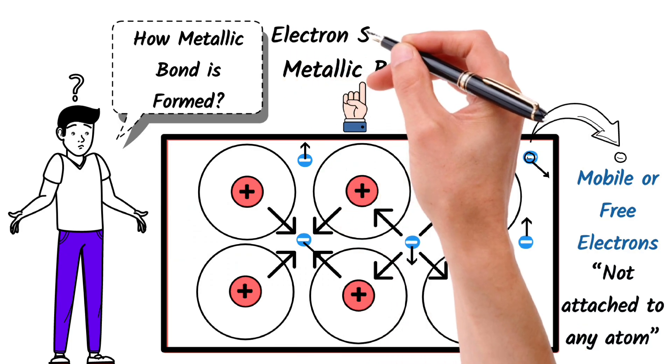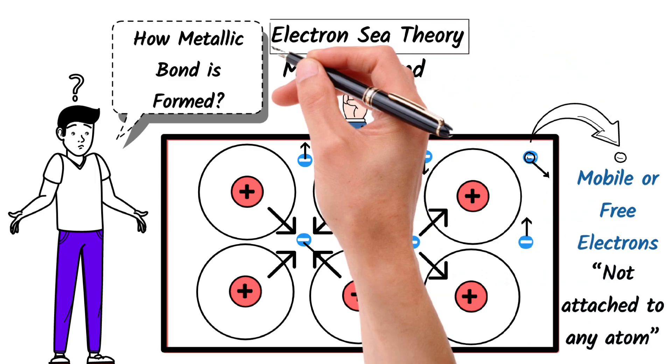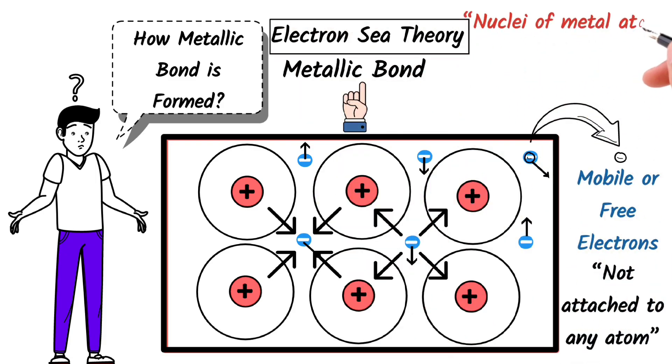According to the electron sea theory, nuclei of metal atoms are submerged in the sea of free delocalized electrons. These free-moving electrons surround the positive ions and hold the metal atoms together.